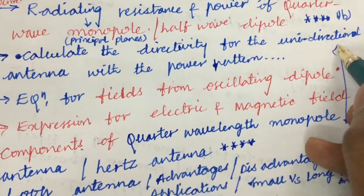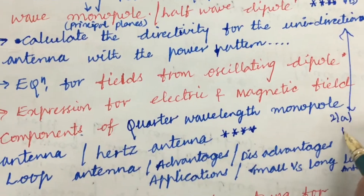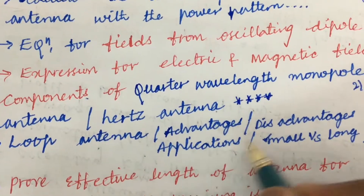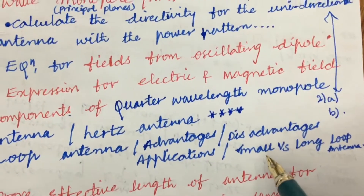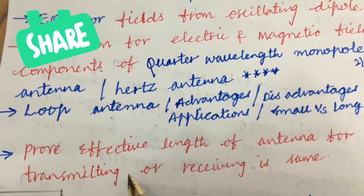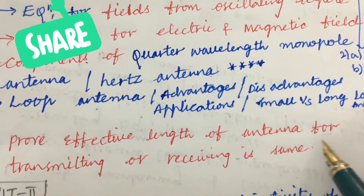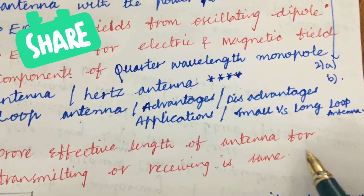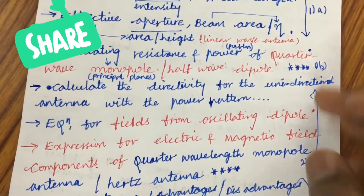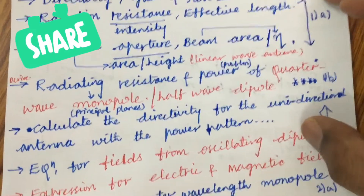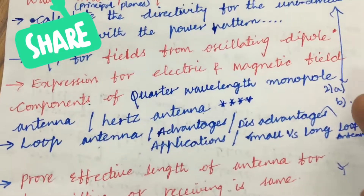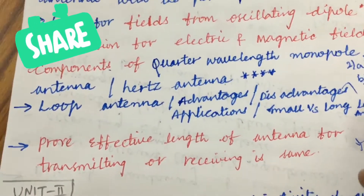From these concepts we can expect 2A and 2B questions, related to loop antenna — its advantages, applications, disadvantages, and differences between small loop and long loop antenna. Sometimes it is also asked to prove whether the effective length of an antenna for transmitting and receiving is the same. From these concepts we can expect questions 1A, 1B, 2A, and 2B. If you prepare these, I can guarantee that 4 questions will be covered from these topics.